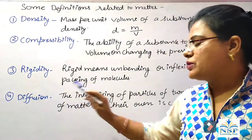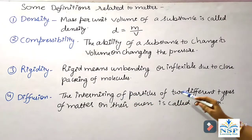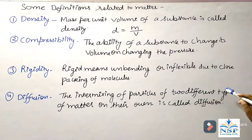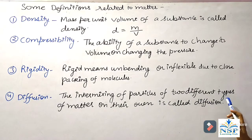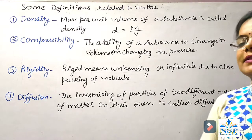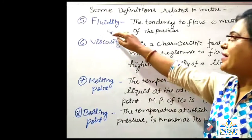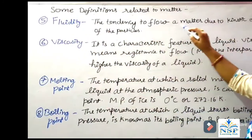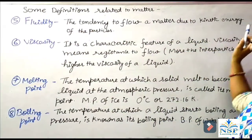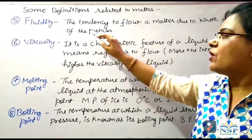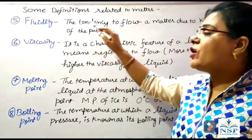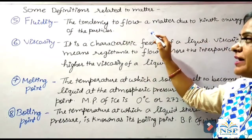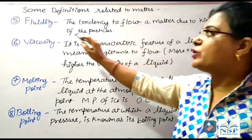Number 4, Diffusion. The intermixing of particles of two different types of matter on their own is called diffusion. Diffusion is higher in the gases state. Number 5, Fluidity. The tendency to flow a matter due to kinetic energy of the particles is called fluidity.